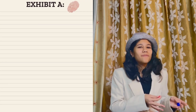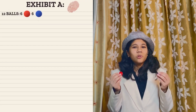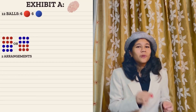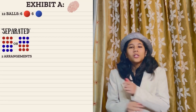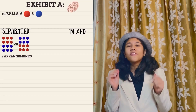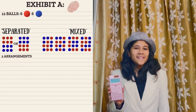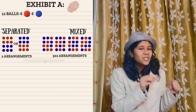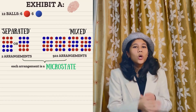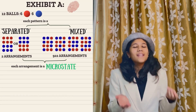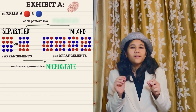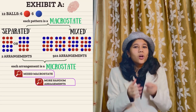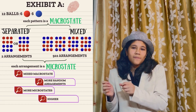Let us take a box of 12 balls — 6 red and 6 blue. There are only two possible ways of separating the balls vertically. But if you want to arrange them randomly, there are nearly a thousand ways of doing so — 922 to be exact. Each of these 924 arrangements is called a microstate, and the overall factor, like separated or mixed, is called a macrostate. So we say that the mixed macrostate has a greater number of microstates or arrangements, so it has higher entropy.